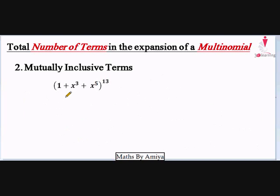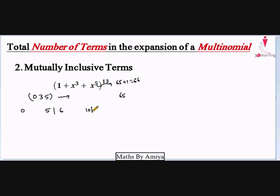Now let's solve a question with missing terms. In the second inclusive type where powers are missing, we count which powers are missing. The total terms should be 5 times 13 plus 1 equals 66, but since some powers of x are missing, we need to find which terms are missing from the total 66. The bracket has powers 0, 3, and 5. In the first bracket range of 0 to 5, we cannot make 1 with 0, 3, and 5; we cannot make 2; we can make 3; we cannot make 4; we can make 5. So missing terms so far are 1, 2, and 4.